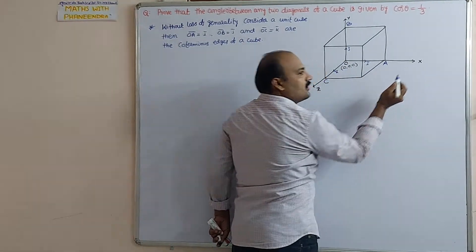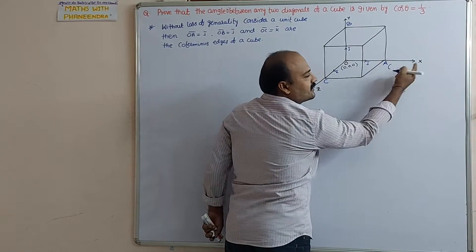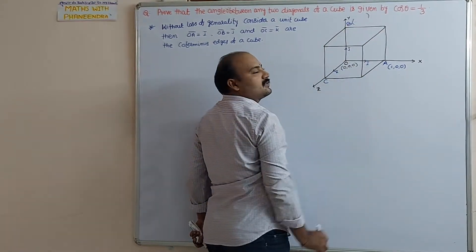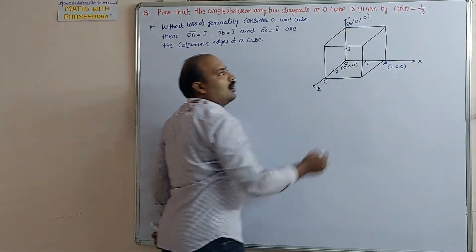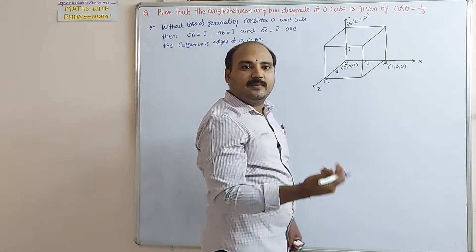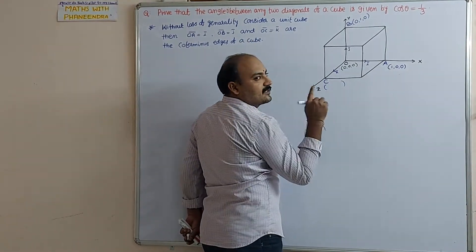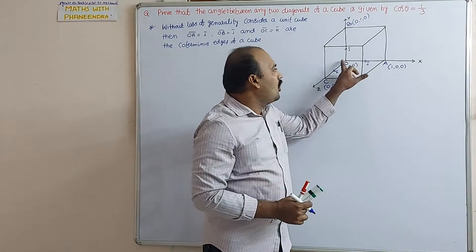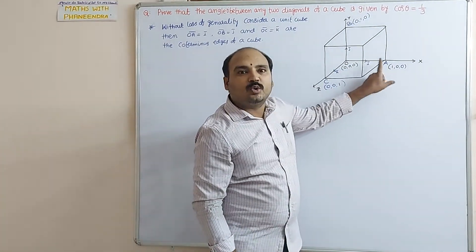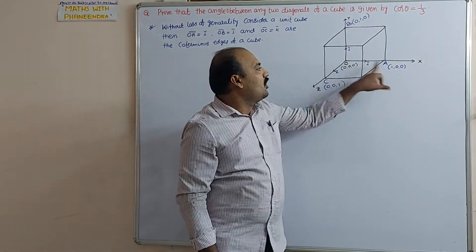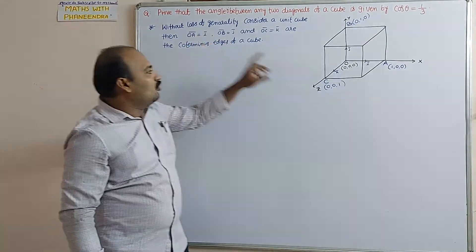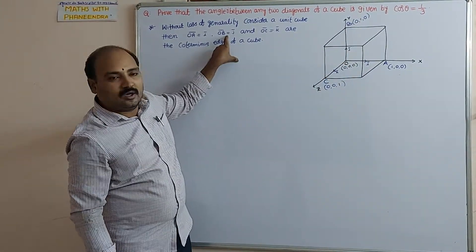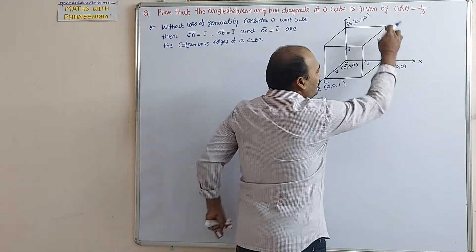Point A lies on the x-axis at a distance of 1 unit, so its coordinates are (1, 0, 0). Point B lies on the y-axis, so its coordinates are (0, 1, 0). Point C lies on the z-axis, so its coordinates are (0, 0, 1). That is why OA-bar equals i-bar, OB-bar equals j-bar, and OC-bar equals k-bar.